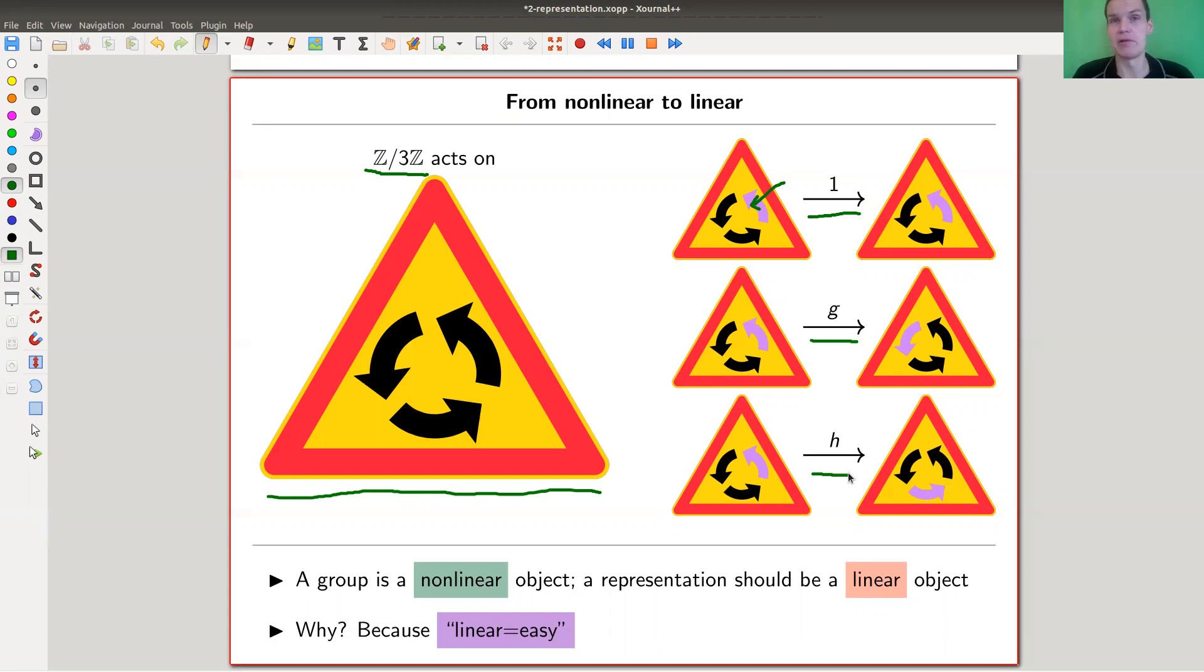So groups are certainly nonlinear objects. There's no linear structure a priori on Z mod 3, or on some other fancy group. But a representation, matrices are cool, should be a linear object. So why work? Because linear algebra. So let's try to find a representation using this picture.